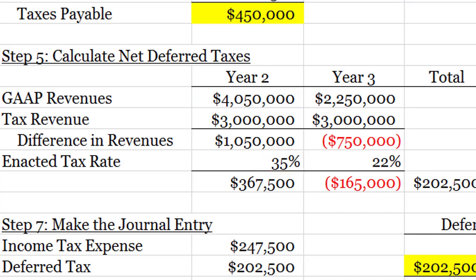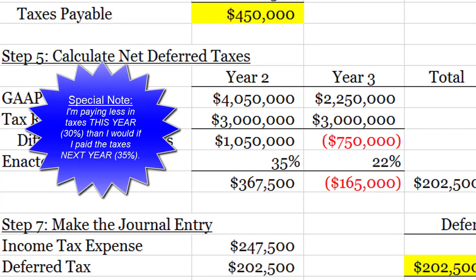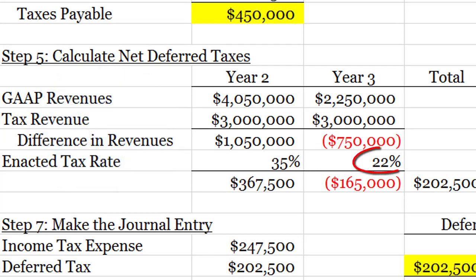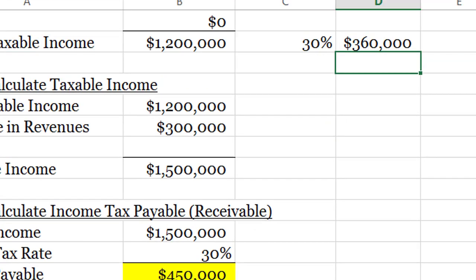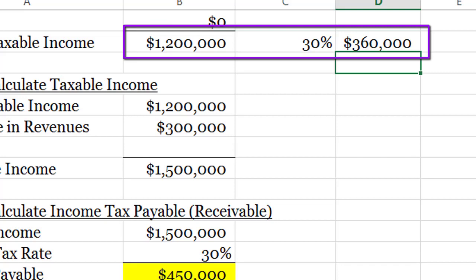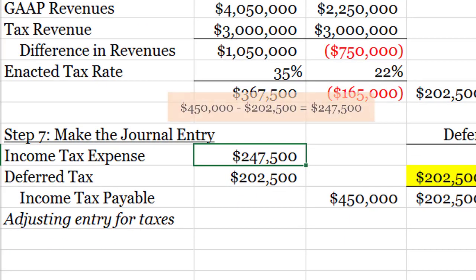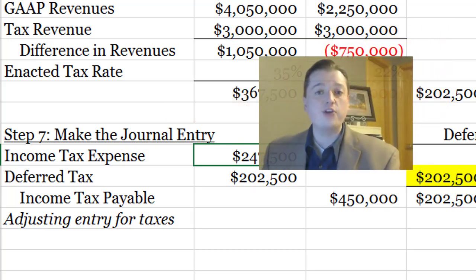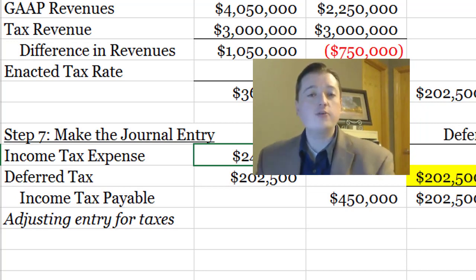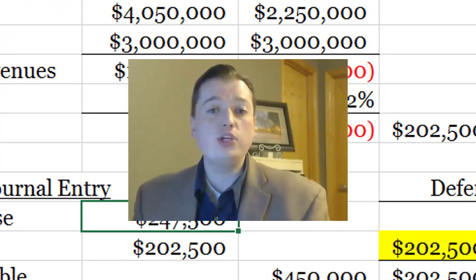They don't match because the future tax rates differ. Next year I'll only pay taxes on 3 million instead of my GAAP number of 4 million, and at the 35% rate that saves money. In year three the rate drops to 22%, saving even more. So the shortcut — calculating income tax expense as book taxable income times the current tax rate — only works when the tax rate doesn't change. If your tax rate is changing, you cannot use it. Always calculate income tax expense as the plug figure in the journal entry.